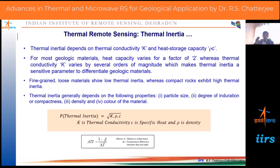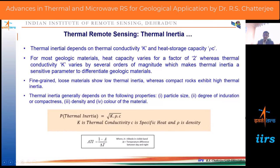Delta-T can be obtained from thermal missions like MODIS and NOAA VHRR, which have one daytime orbit and one nighttime orbit over the Earth. In fact, MODIS has four temperatures available for the same area — two from Terra-MODIS and two from Aqua-MODIS. You need one midday and one midnight temperature to get delta-T, and from that you can easily calculate the thermal inertia.